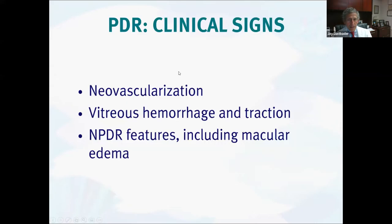This shows a normal fundus contrasted with a patient with diabetic macular edema. In two dimensions you can't see that the macula is swollen, but you can appreciate the abnormal hard exudates and microaneurysms causing leakage and fluid accumulation within the macula. Proliferative retinopathy's key sign is neovascularization, most commonly seen around the optic nerve — so-called NVD, neovascularization of the disc. You can also see it elsewhere in the retina — given the clever name NVE, neovascularization elsewhere.